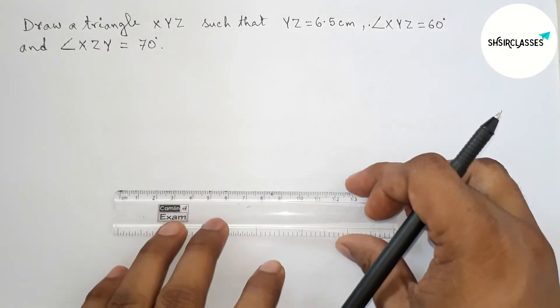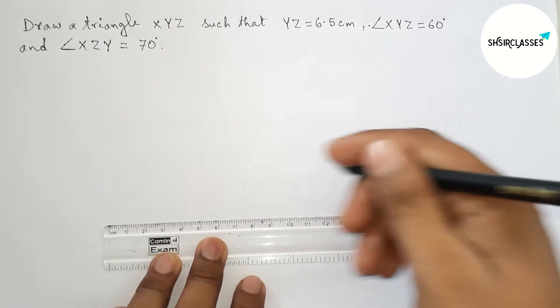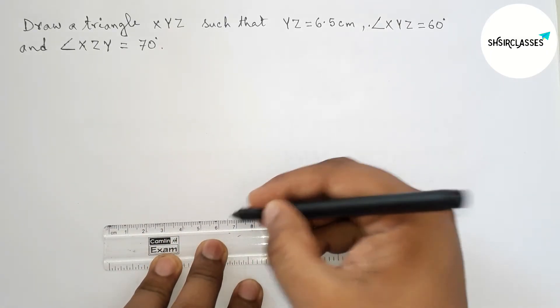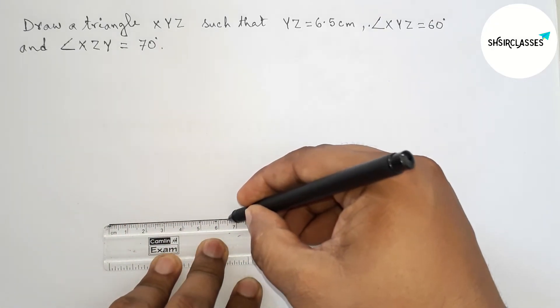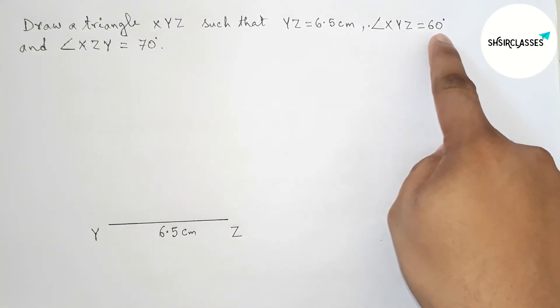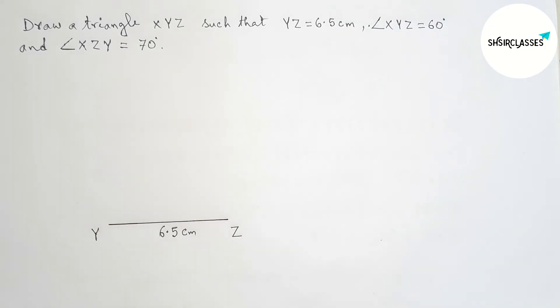First of all, drawing here the given side YZ equal 6.5 centimeter. So here this is 6.5 centimeter line segment, so labeling here Y and Z and this is 6.5 centimeter.